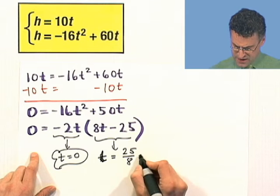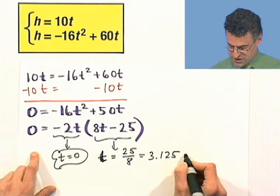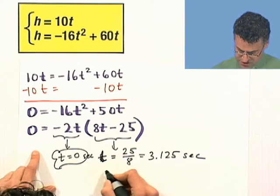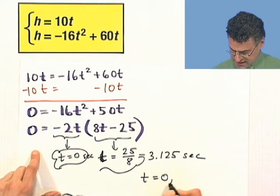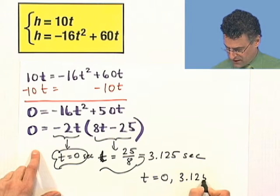And what is 25 over 8? That's equal to 3.125. And of course, the units here are seconds. So I should mark that down, seconds. So we see two answers: t equals zero seconds and t equals 3.125 seconds.